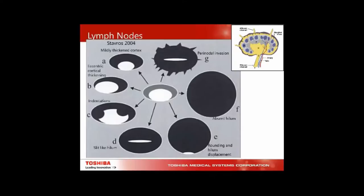To determine if a lymph node is abnormal, some use a 2-to-1 long-to-height ratio or measure cortical thickness with 3 mm as maximum. More important is what the cortex looks like. When cancer enters through afferent channels into the cortex, it locks on and you may get eccentric cortical thickening. This causes indentations of the hilum, then a slit-like hilum, rounding, hilum displacement, or absent hilum — the easier ones to pick up.